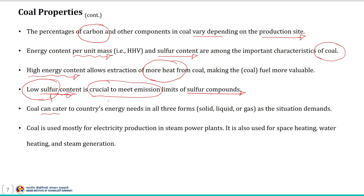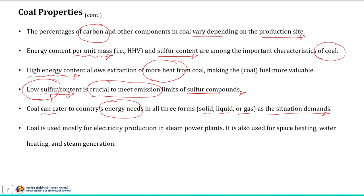Coal can cater to a country's energy needs in all three forms — solid, liquid, or gas — as the situation demands. Solid coal can be converted into either liquid or gaseous fuel using a suitable and efficient conversion technology. Coal is used mostly for electricity production in steam power plants, and is also used for space heating, water heating, and steam generation.